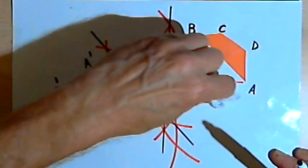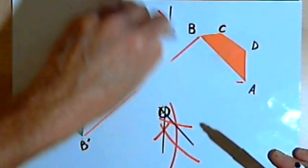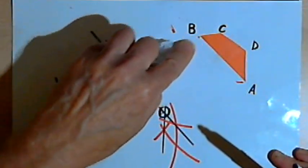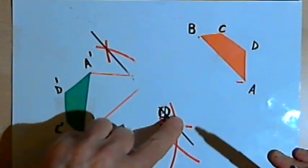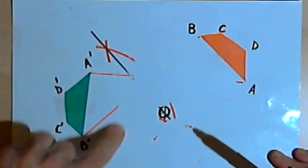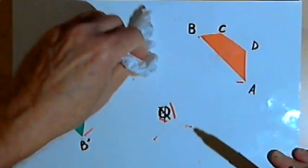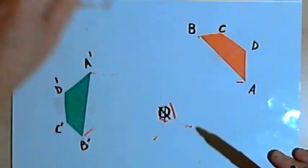Now I'm going to clean up some of these extra lines that I don't need and show how to find the angle of rotation. Okay, so that's a little bit neater.